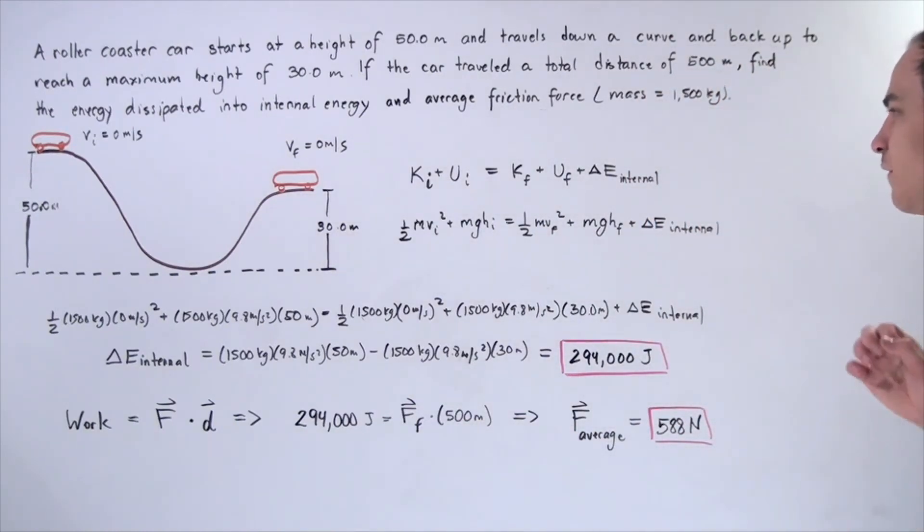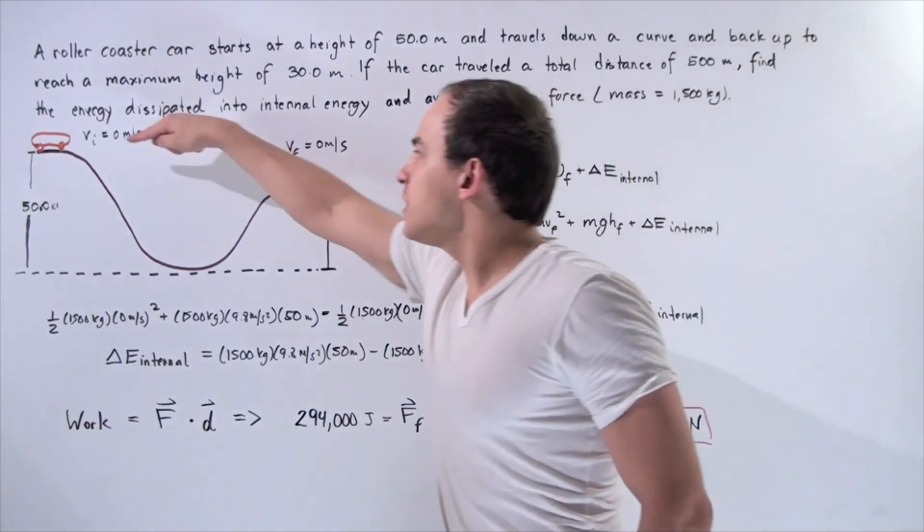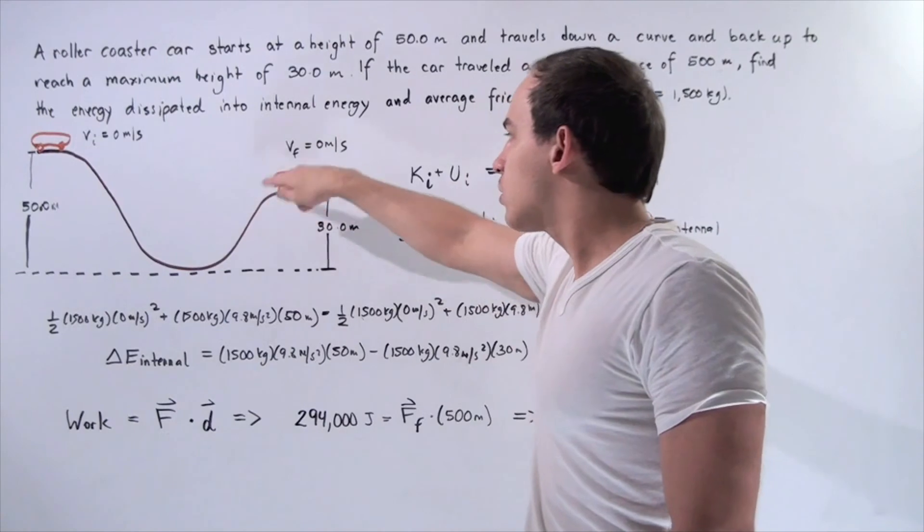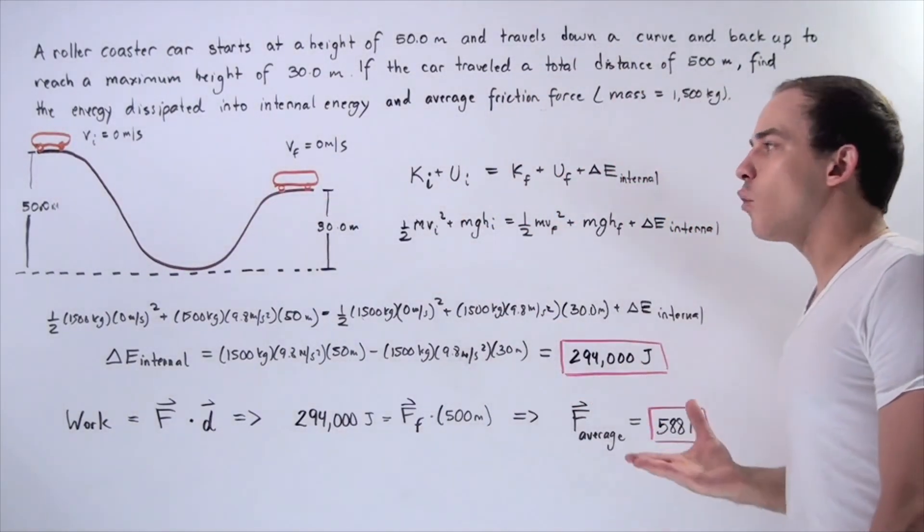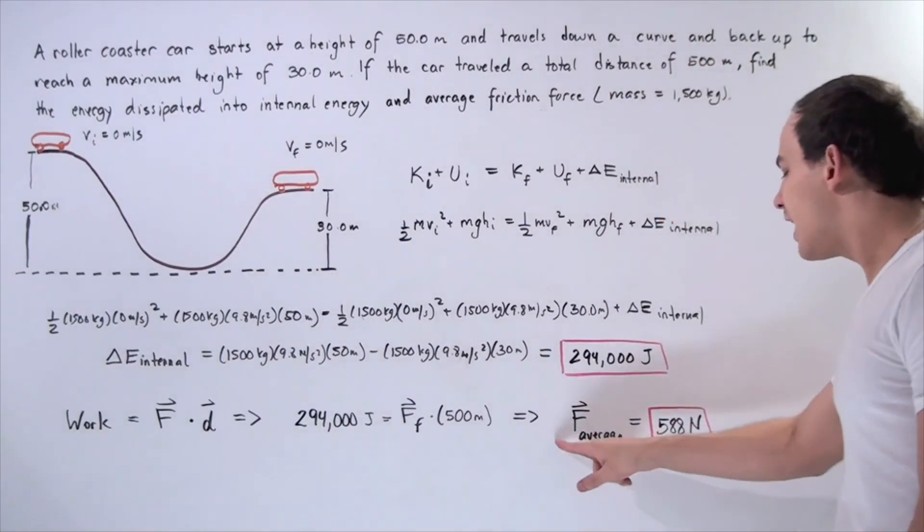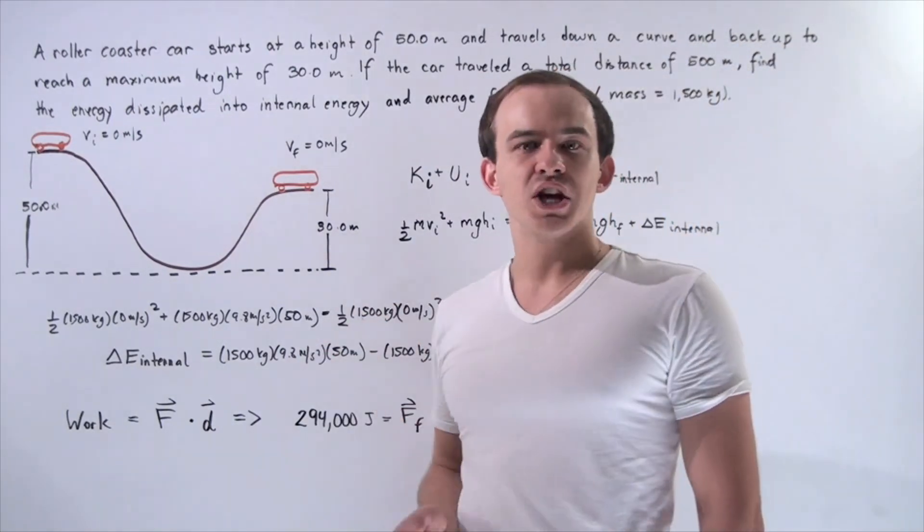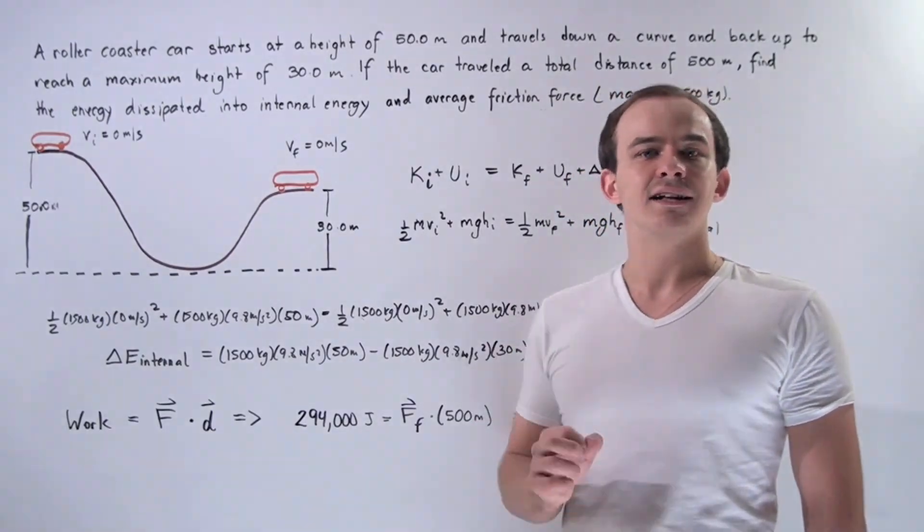So this equals our average force we're trying to find multiplied by 500 meters. We divide both sides by 500, and we find that the average frictional force is equal to 588 newtons. We're choosing the average force because when this object travels along our coaster, the frictional force varies. It's not constant, and that's exactly why we're asking to find the average force.